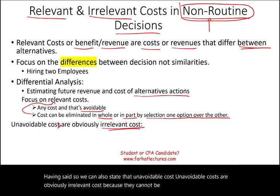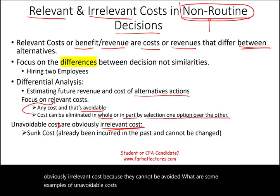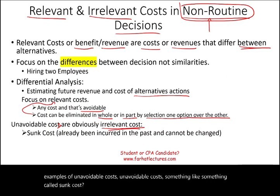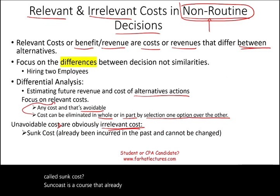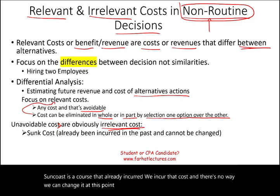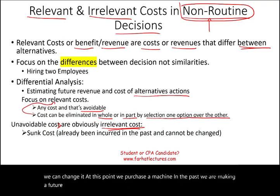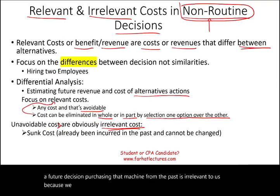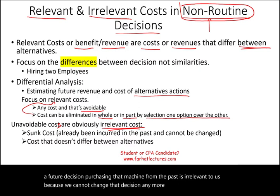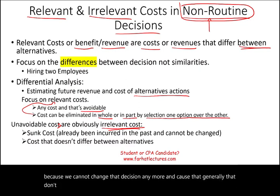What are some examples of unavoidable costs? One example is sunk cost — a cost that has already been incurred. For instance, if we purchased a machine in the past, that's irrelevant to a future decision because we cannot change it. Costs that generally don't differ between alternatives are also called unavoidable costs.